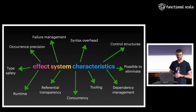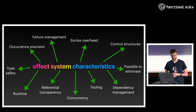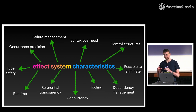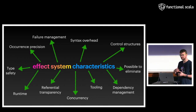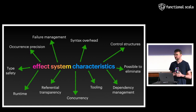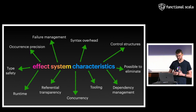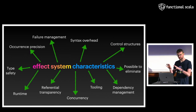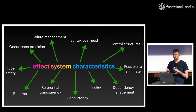We will evaluate a couple of effect systems and look at some of their characteristics: syntax overhead, whether it's possible to use custom control structures, any APIs to manage concurrency, whether the effect system provides referential transparency meaning you can represent programs as values, what kind of runtime it uses, and how precise the effect systems are — whether looking at source code we can really know where the effects happen.